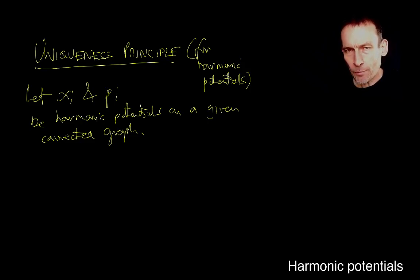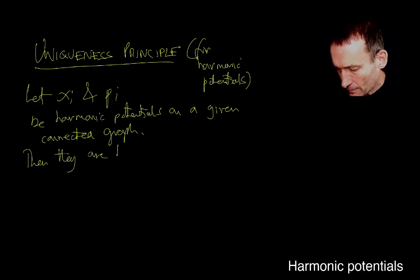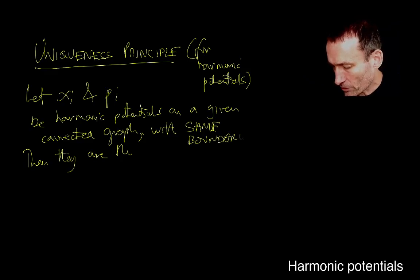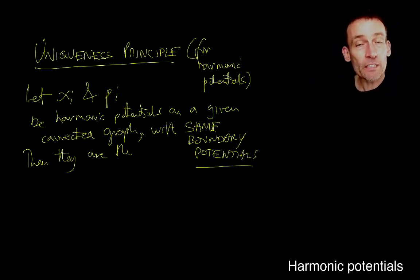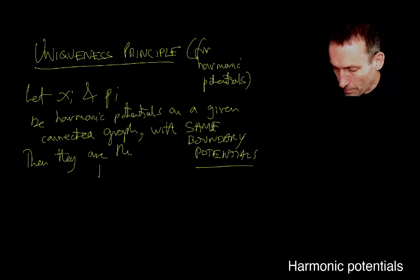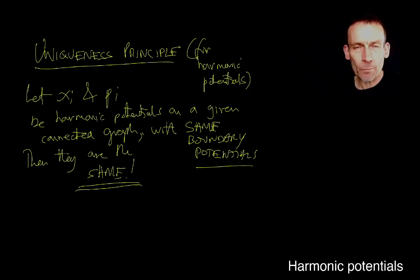If I've got two harmonic potentials and we both, we know that both of them are harmonic, I've already established that for you. Then they are, with the same boundary potentials, by which I mean that you pick the same boundary nodes and you've got the same potentials set at those nodes, then they are the same. In other words, you can't have more than one harmonic potential satisfying given boundary data.